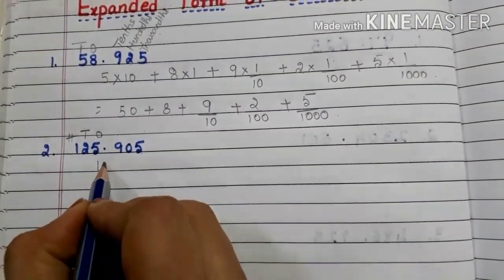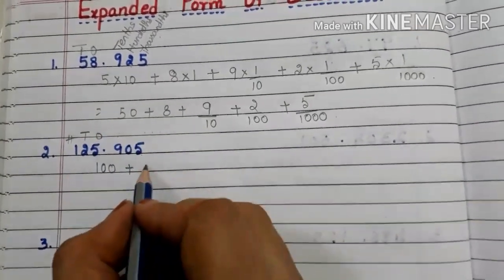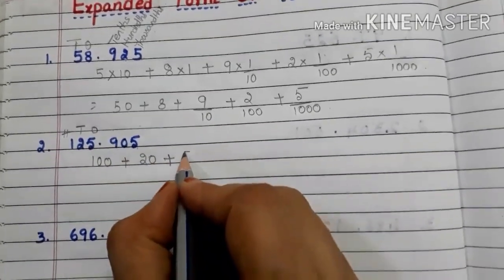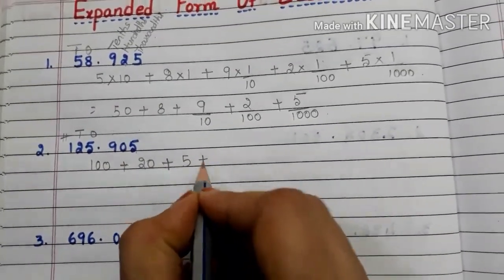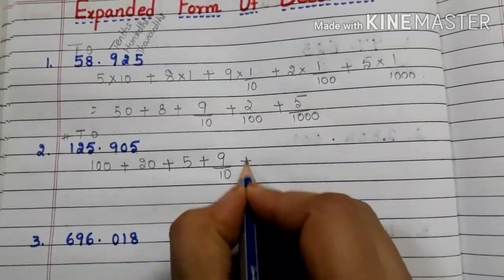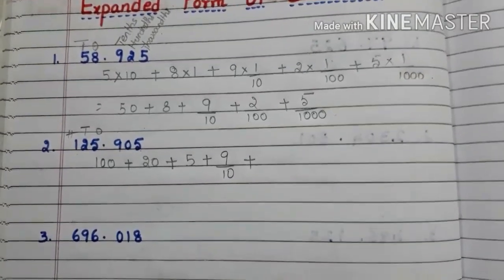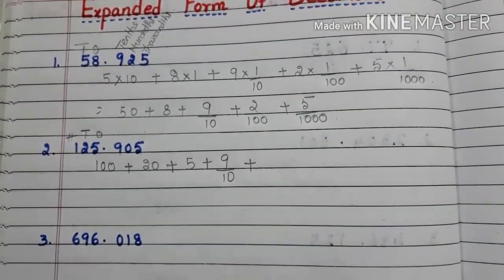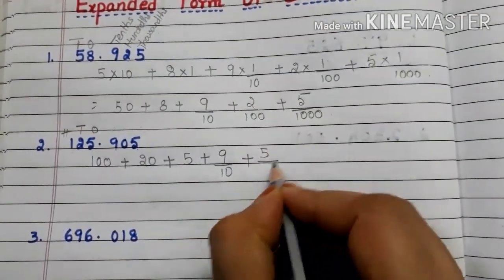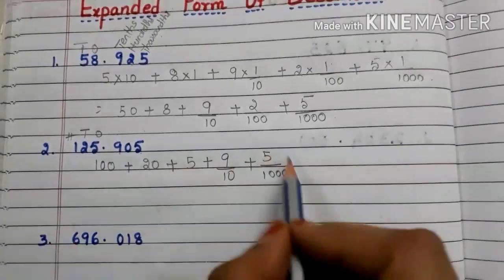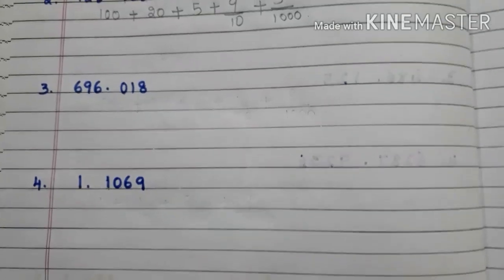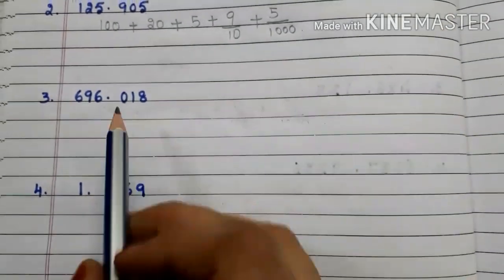Let us write: 1 is in the 100's place so 100, plus 2 is in the 10's place so 20, plus 5 is in the 1's place so 5, plus 9 is in the 10ths place so 9 by 10. 0 is in the 100ths place — 0 into anything is 0, so we need not write it. 5 is in the 1000ths place so 5 by 1000. This is the expanded form of 125.905.